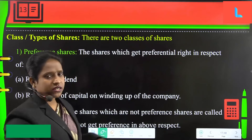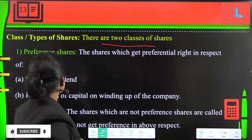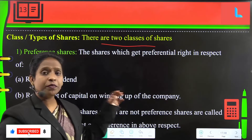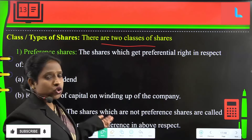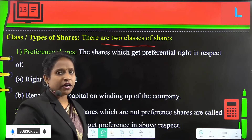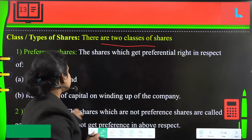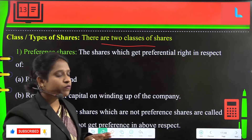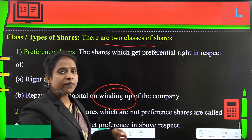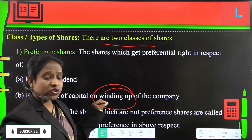Next, classes or types of shares. There are two classes of shares. First, preference shares — these are shares which get preferential rights in respect of: rights of dividend, meaning when the company earns profit and distributes dividend, preference shareholders are given priority first; and repayment of capital on winding up of the company, preference shareholders are given preference.